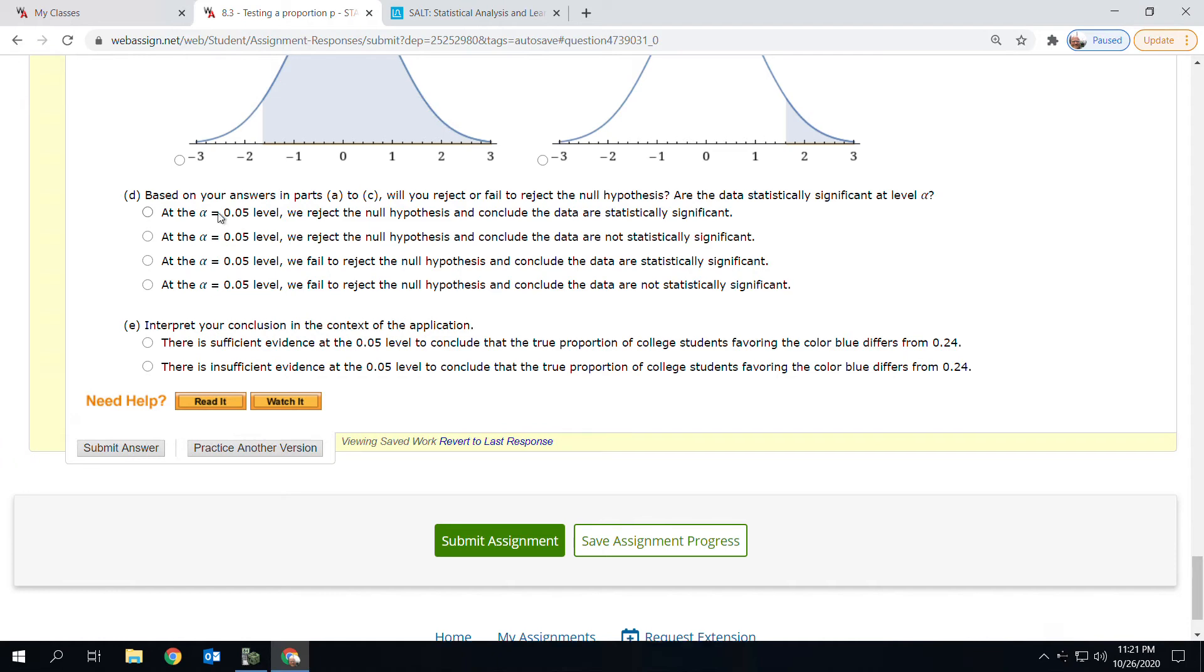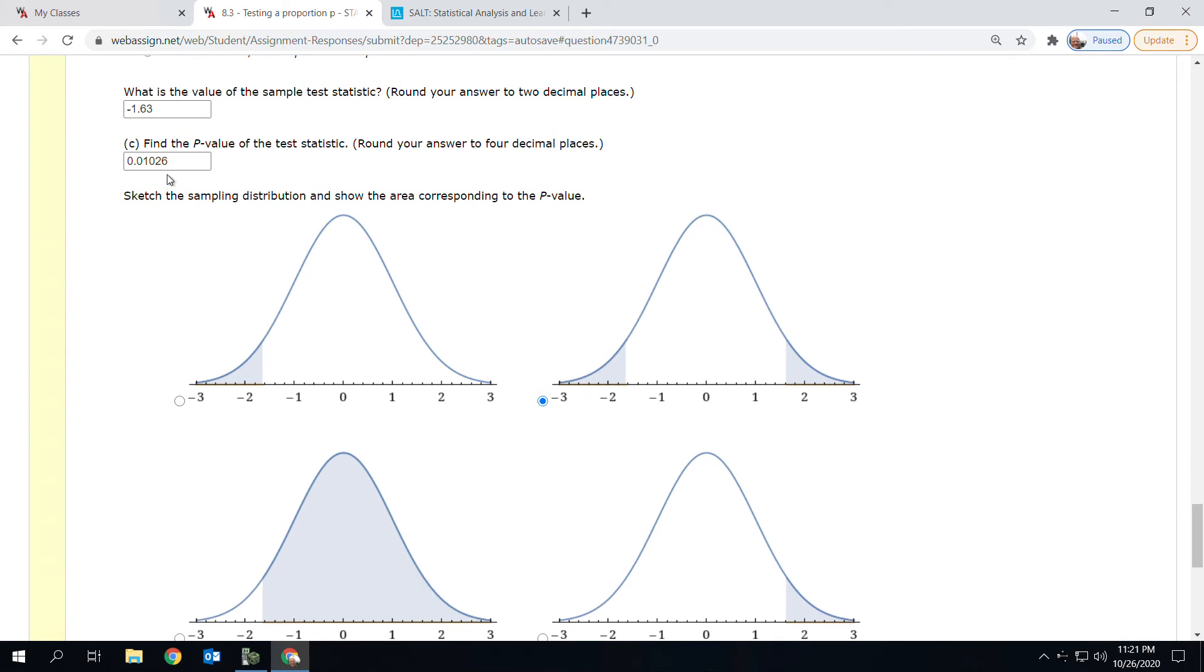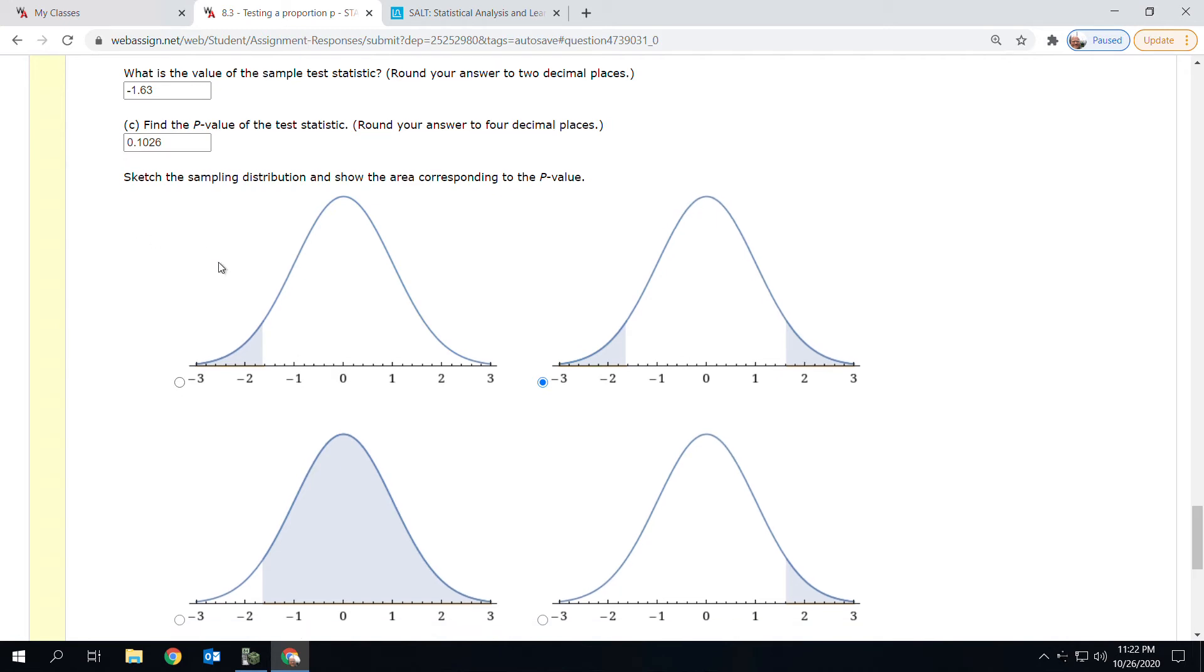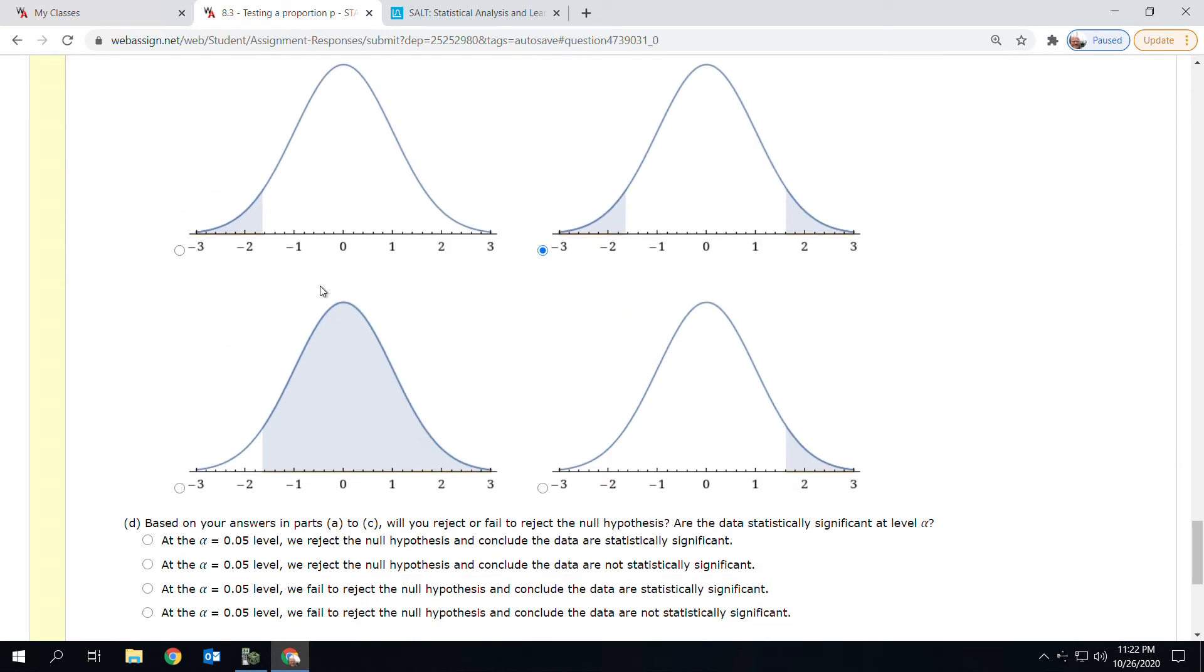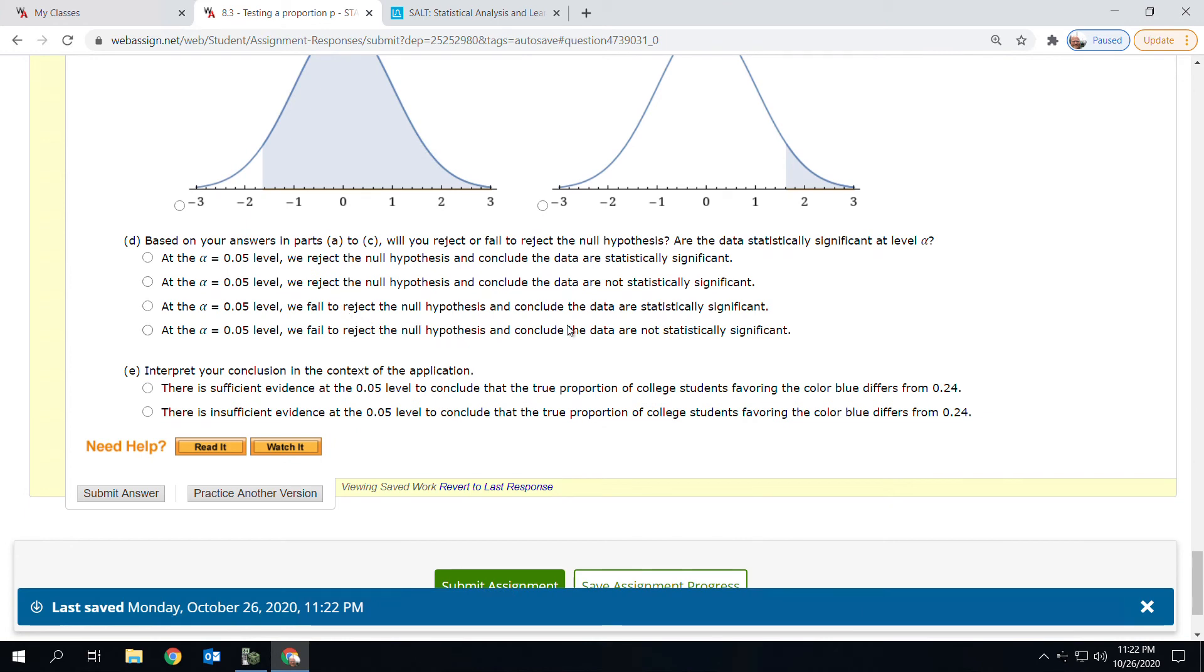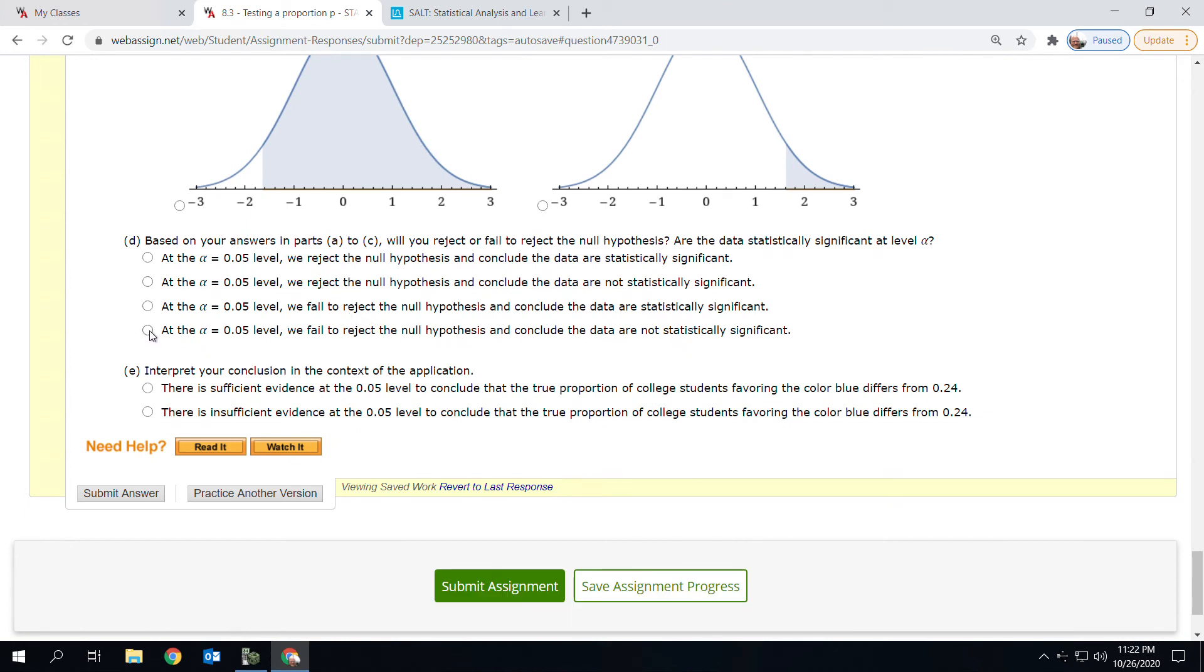Oh, hold on. Let me take that back. P is greater than alpha. If P is greater than alpha, you do not reject the null. Fail to reject the null. Not statistically significant, and there is insufficient evidence in our sample to conclude that the true proportion of college students favoring the color blue differs from 24%.